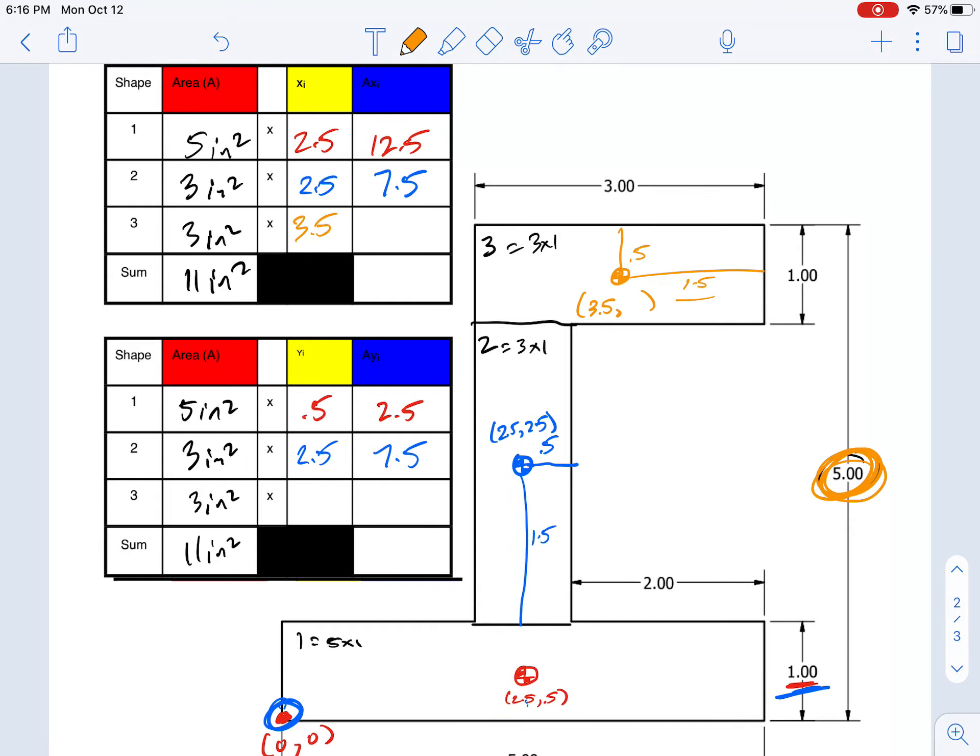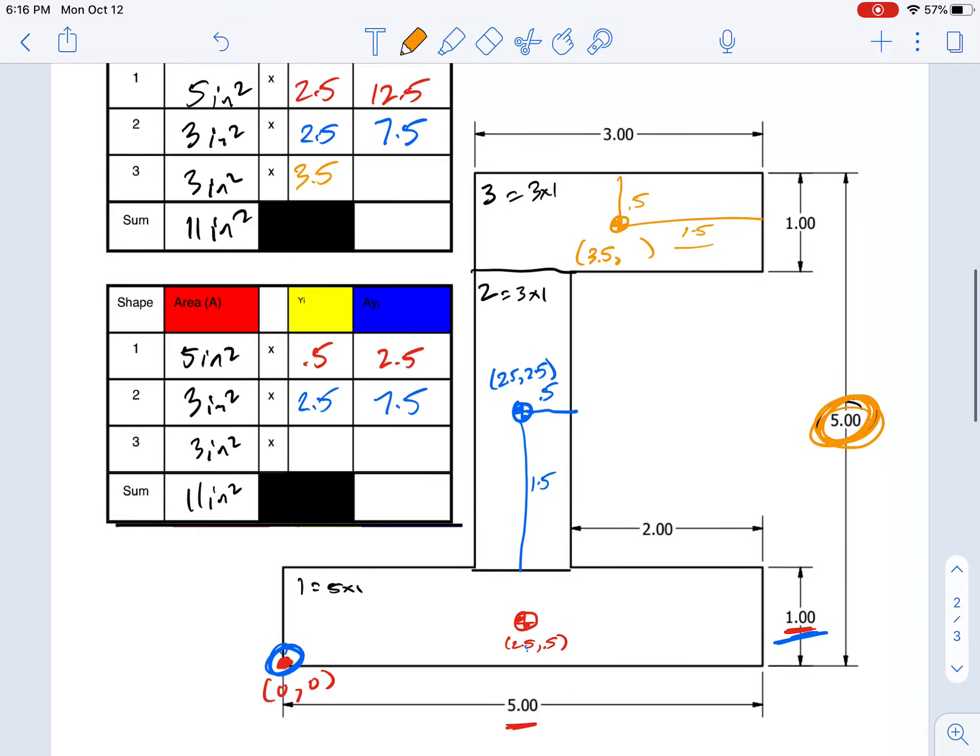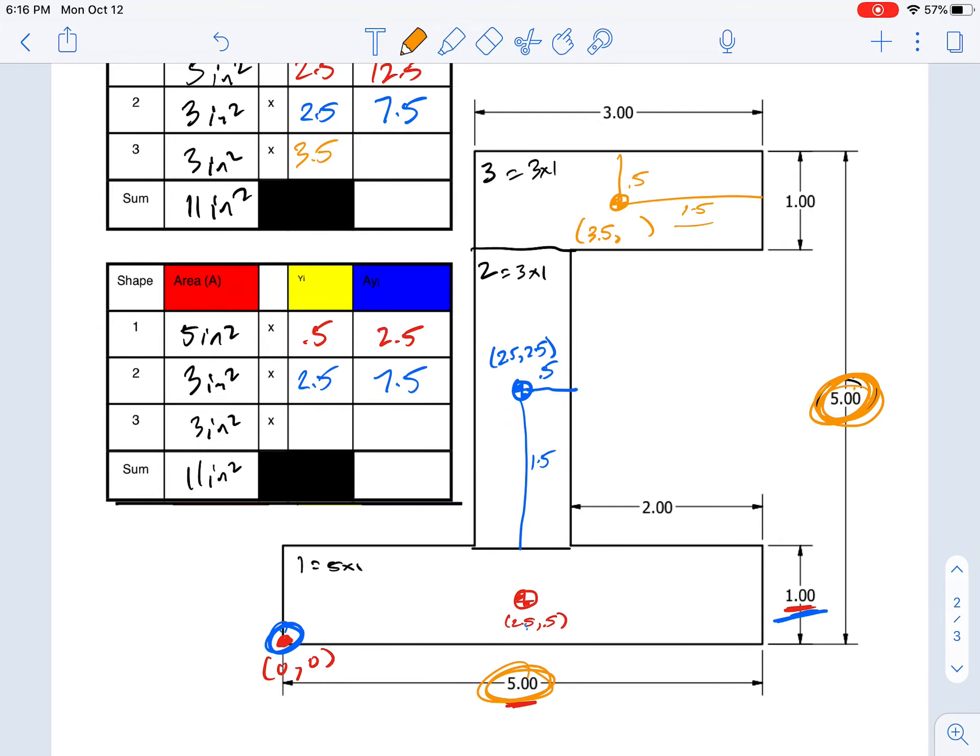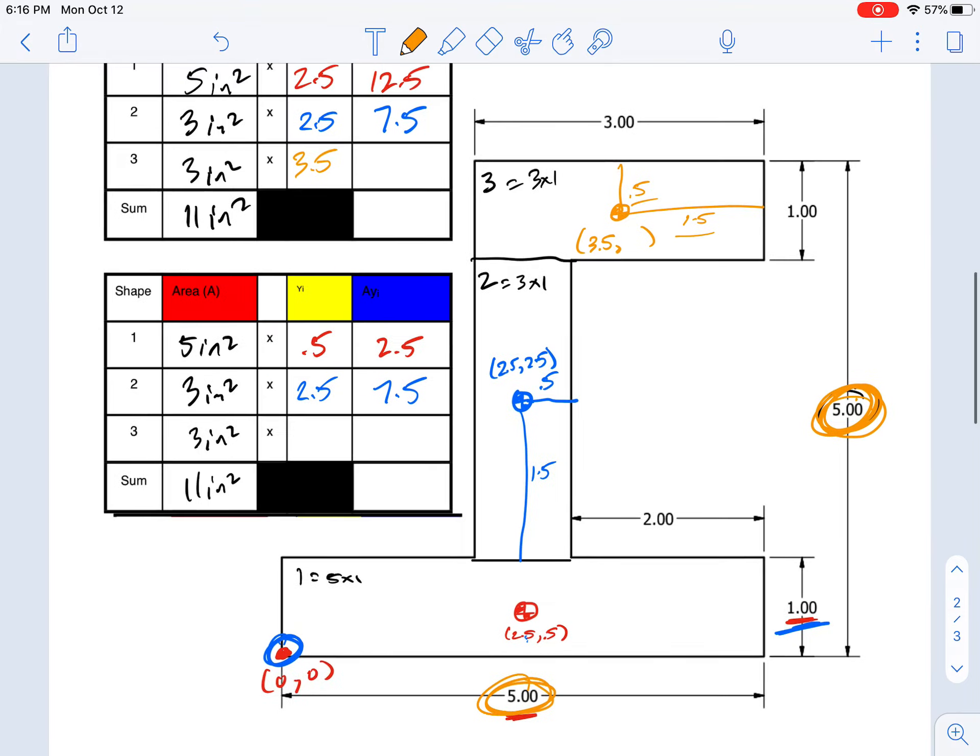And the y location is this 5 minus the 0.5, so that's 4.5. So 3 times 3.5 gives us 10.5 for the x weighted area, and 3 times 4.5 gives us 13.5 for the y weighted area.